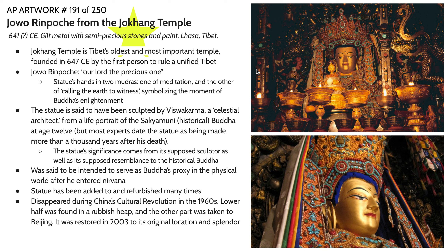There is a lot of speculation around the particular provenance of this statue. Many people who visit the temple say it was sculpted by Viswakarma — a celestial architect — who actually sculpted it while looking at the Buddha himself when he was 12 years old. The association with Viswakarma, the celestial architect, as well as the notion that this piece was carved from the likeness of the actual Buddha himself, lends to its sacredness and hierarchical importance, which is why this temple is the most important one in Tibet. It was intended to serve as Buddha's proxy in the physical world after he entered nirvana.